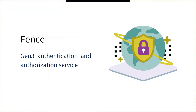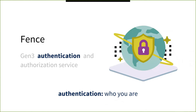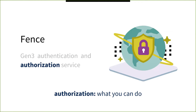Fence is the Gen3 authentication and authorization service. Authentication is who you are — a unique user. For example, if you log into a web page with a username and password, that identifies you as the user. Authorization is what you can do. For example, if you can access some protected data sets, that is what authorization means — that you are allowed to do specific things as yourself.